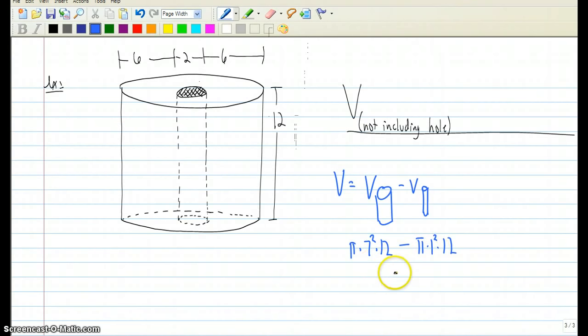576 pi would be your exact area, and that is approximately 1,809.56 units cubed.